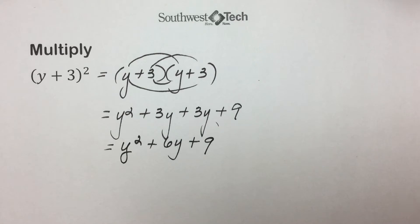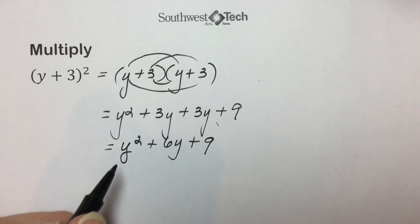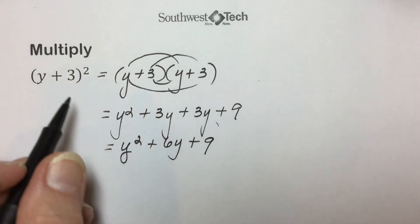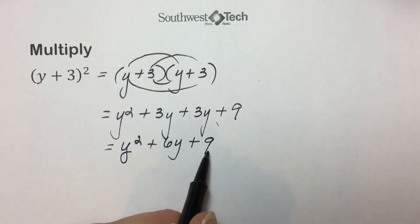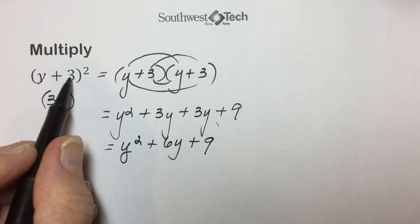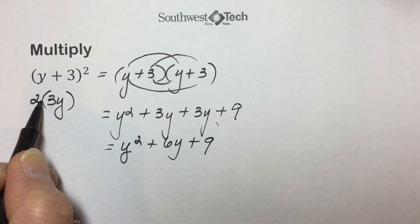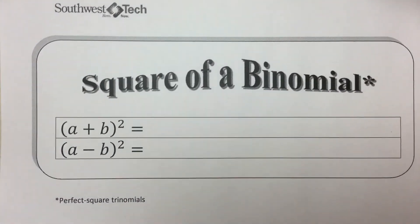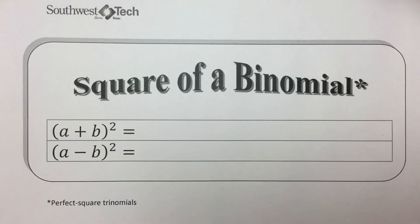Because this product occurs so often, there's a faster method that has been developed. If we look at the pattern here, the first term squared is the first term we have. The last term squared is our last term in the binomial. And if you multiply the first and second terms together and double them, we end up with the middle term. This is known as the square of a binomial, or sometimes the perfect square trinomial.